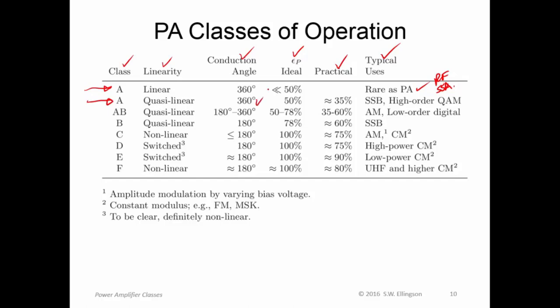Class A quasi linear, also 360 degrees conduction angle, ideal efficiency of 50%, if we're quasi linear. If we run the waveform all the way to the rails, it's 50%. In practice, we can get about 35%. That's a pretty common class A quasi linear efficiency. And this shows up in single sideband modulations, and for high order quadrature amplitude modulation. This particular modulation requires very high linearity, so you really don't have much choice but to use class A.